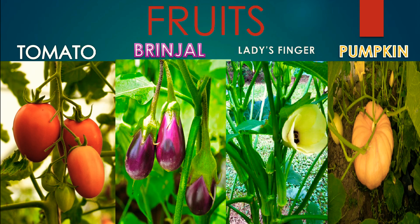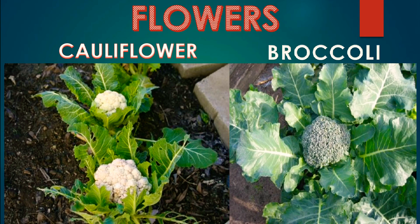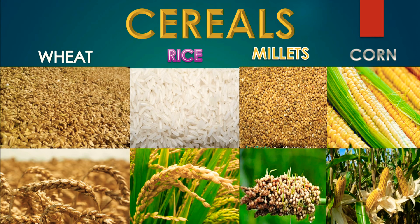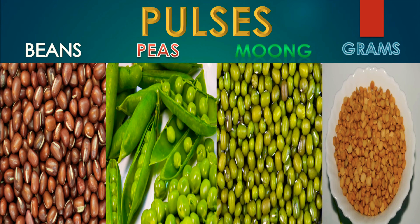We eat flowers of some plants like cauliflower and broccoli as vegetables. We eat seeds of some plants like cereals and pulses. Cereals are seeds of plants used to make flour. Wheat, rice, millet and corn are called cereals. Pulses are the seeds of plants which are cooked and eaten as food. Beans, peas, moong and gram are called pulses.